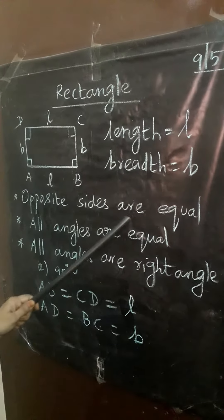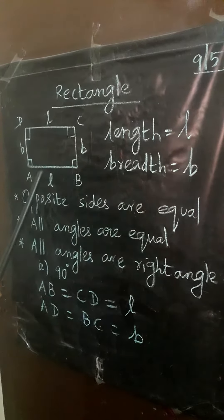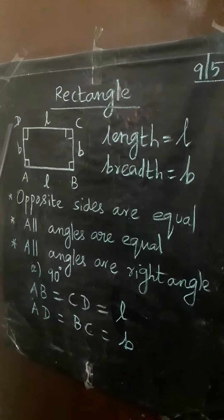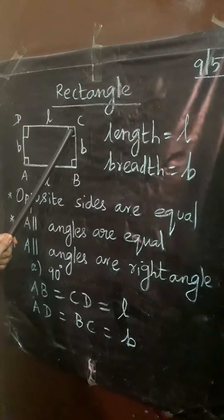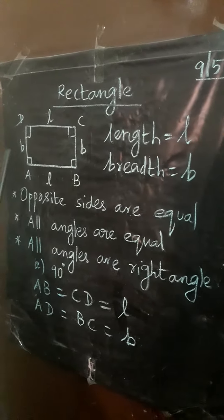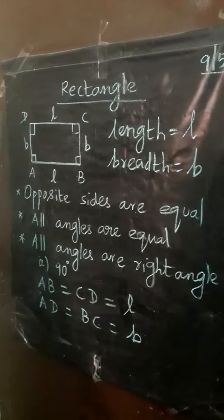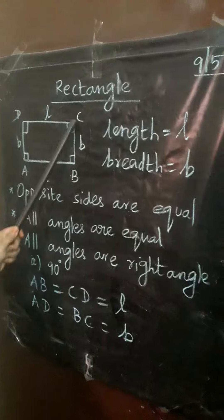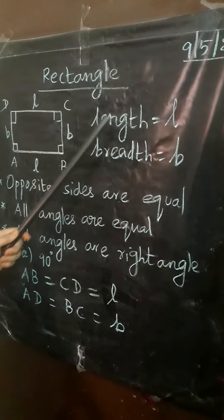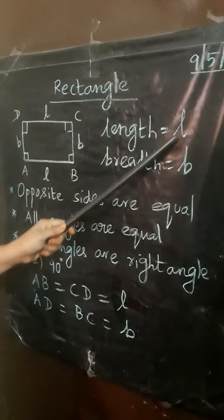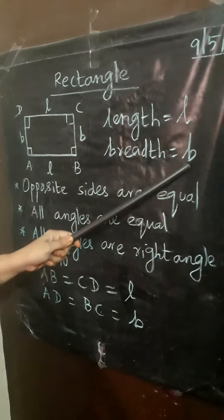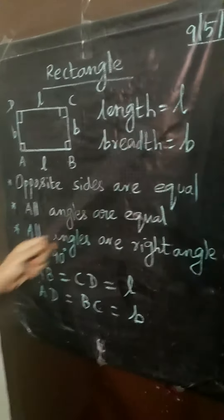Opposite sides are equal. AB is equal to DC, and AD is equal to BC. We denote the letter: L equals length, and B equals breadth.